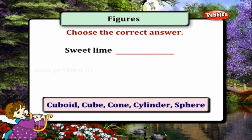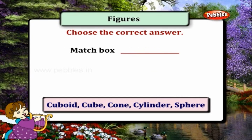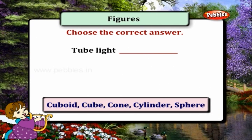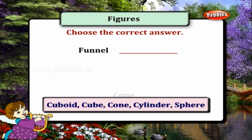Choose the correct answer. Sweet lime — sphere. Matchbox — cuboid. Dice — cube. Tube light — cylinder. Funnel — cone.